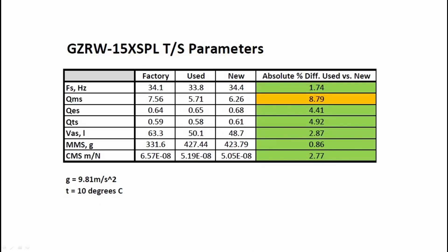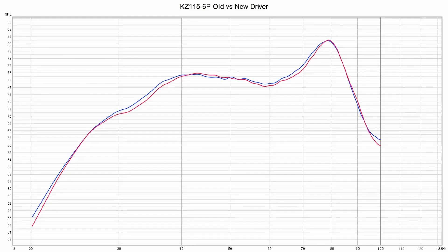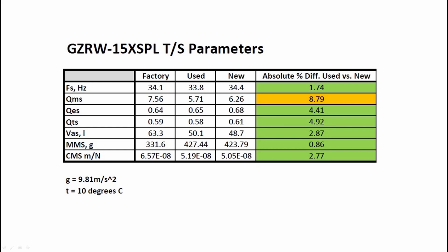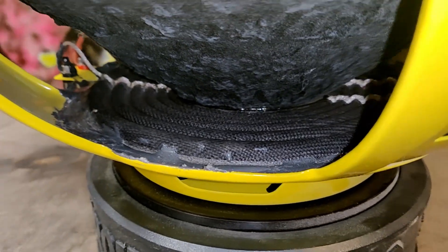The measurement between the used and the new driver revealed little to no change in TS parameters, which is in line with my previous video where I ran the response sweeps and saw no major difference. The FS difference was below 2% and the QTS value is also quite similar. Some difference can be seen for the QMS value as the used driver seems to be a bit stiffer, possibly due to added epoxy on the spider surround. Overall I would say that the drivers act almost the same.